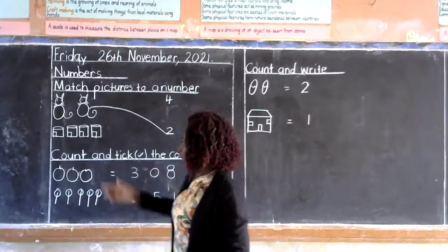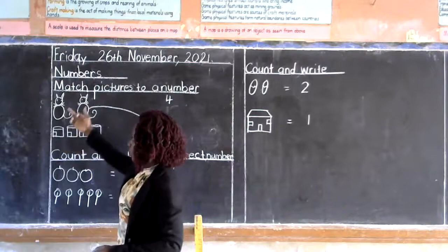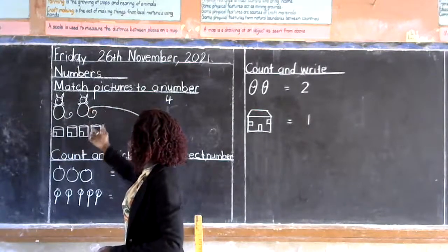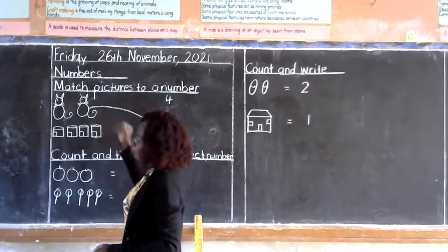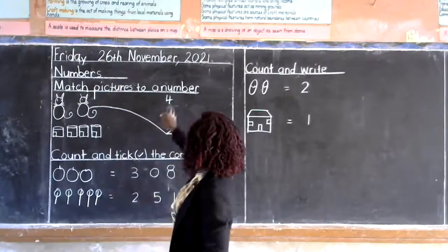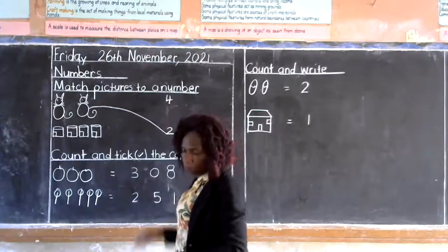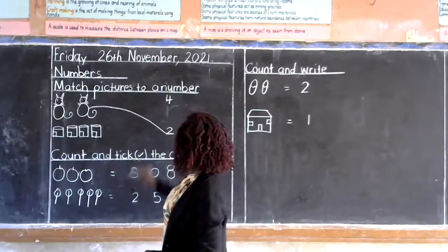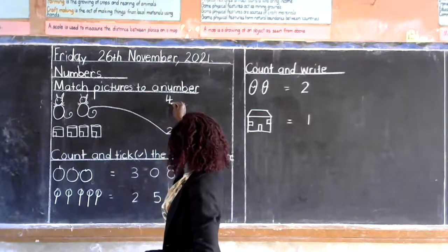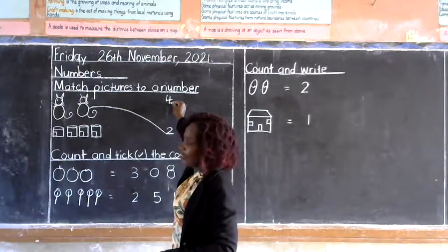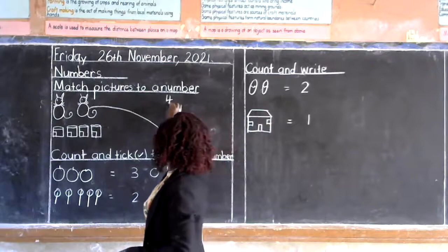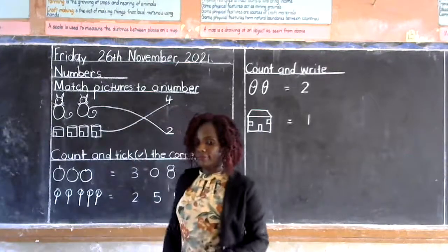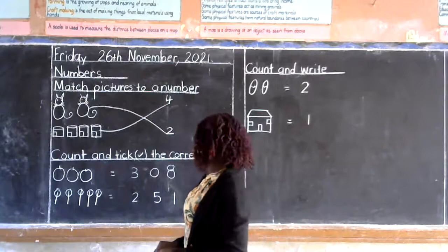Now can we count the teams? One, two, three, four. One, two, three, four. We are going to look for number four. Can we look for number four? Is this number four friends? Yes, we match to the teams. Have you got me friends?